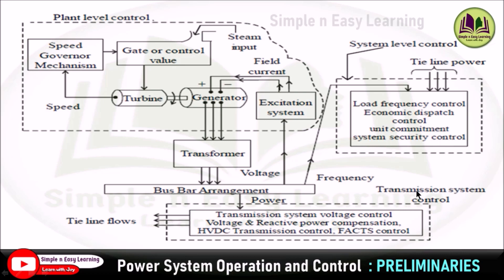Now we are going to talk about transmission system voltage control. In the transmission line, voltage changes occur due to the effect of transmission line parameters such as resistance, line inductance, and line capacitance. Transmission system voltage control is the process of controlling system voltage within permissible limits — for example, plus or minus 0.05 per unit or plus or minus 5%. The devices used to control transmission system voltage are capacitor banks, reactors, static VAR compensators (SVC), tap-changing transformers, synchronous condensers, and FACTS devices. The process of control is carried out automatically without affecting system performance, and reactive power is compensated using FACTS control to regulate the voltage.